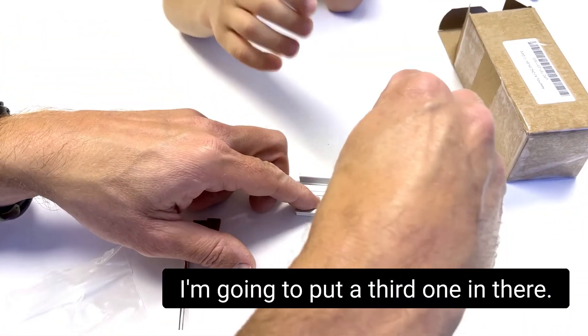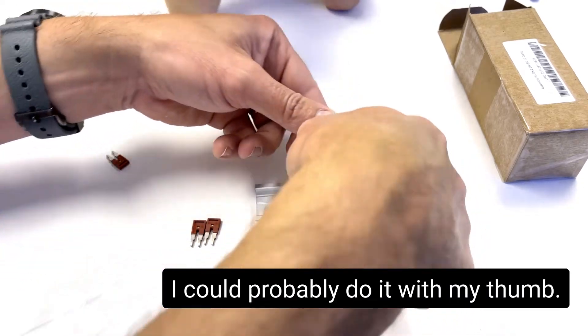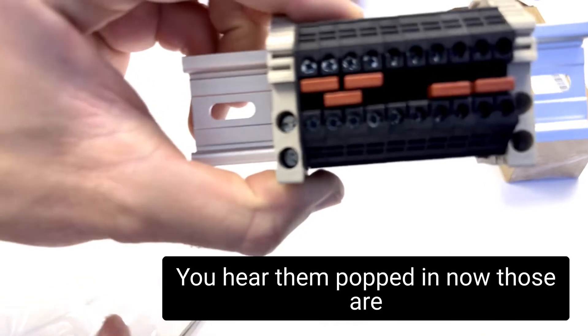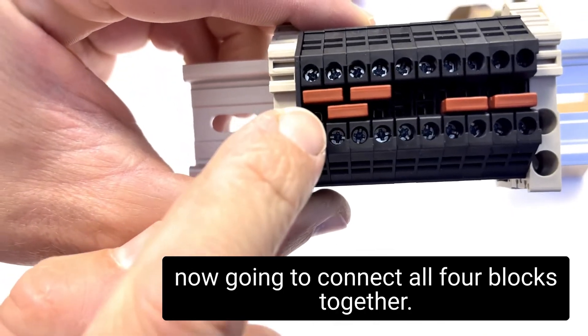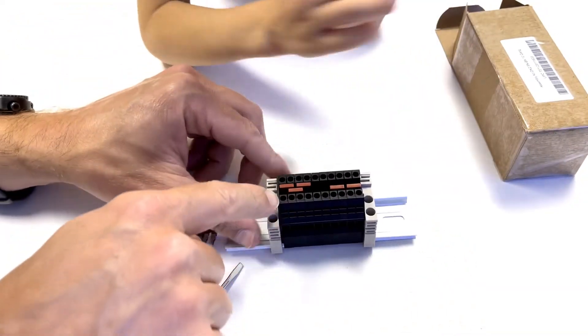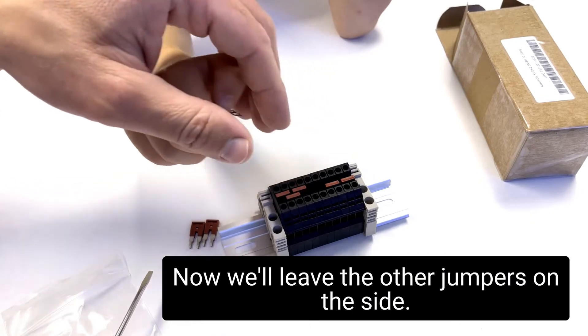And then we'll overlap them. I'm going to put a third one in there. See, you can almost do it. I could probably do it with my thumb here. Here we go. You hear them pop in? Mm-hmm. Now those are now going to connect all four blocks together. One, two, three, four. I can see them in there. Yeah, see them in there? See how they overlap? Now, we'll leave the other jumpers on the side.